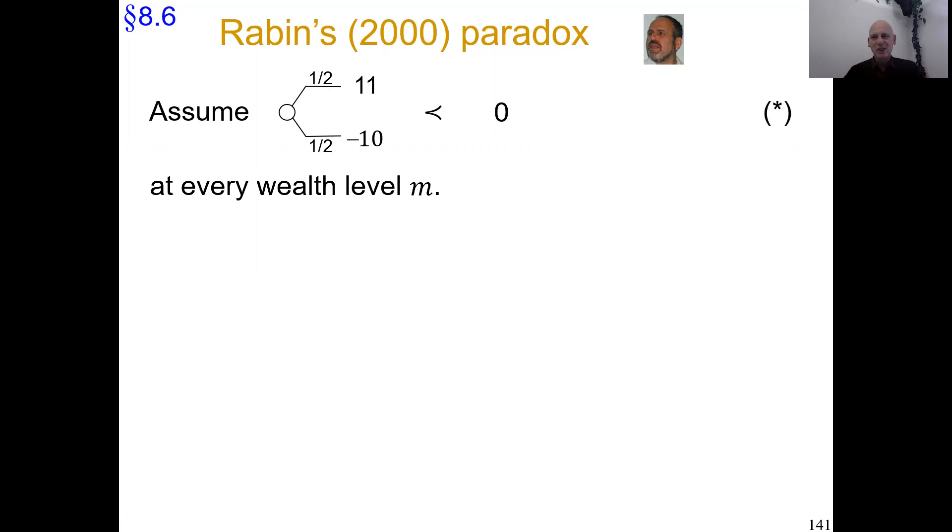I want to do a within-single-agent analysis, so I'm going to assume that we consider one representative average agent declining the lottery at their wealth level. We also assume that if we change the wealth level by adding amount m to the bank account, the agent will continue to have that preference. From now on, we assume one representative agent declining this lottery at many, maybe all, wealth levels.